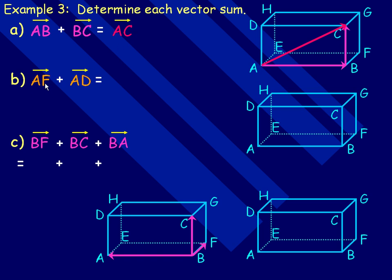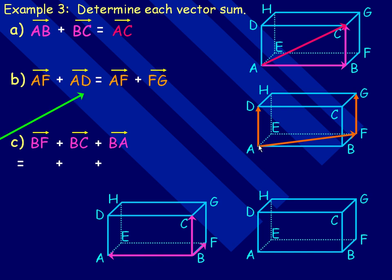In part b, vectors AF and AD are tail to tail, not head to tail. I'll start with the AF vector and leave it alone. Then I'll draw an equivalent vector to AD starting at the head of AF — that vector is FG, which equals AD since they are the same length, parallel, and in the same direction. Now my two vectors are head to tail, and the vector sum goes from point A to point G, so that's vector AG.